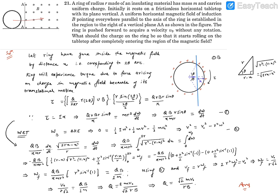As soon as it goes inside completely, it starts rolling — that's what we are looking for. Initially it has been given velocity V₀ in the forward direction. Let's consider the situation when the ring has entered the magnetic field by a distance X. The ring has entered by distance X, and the total arc angle that portion makes is 2θ.